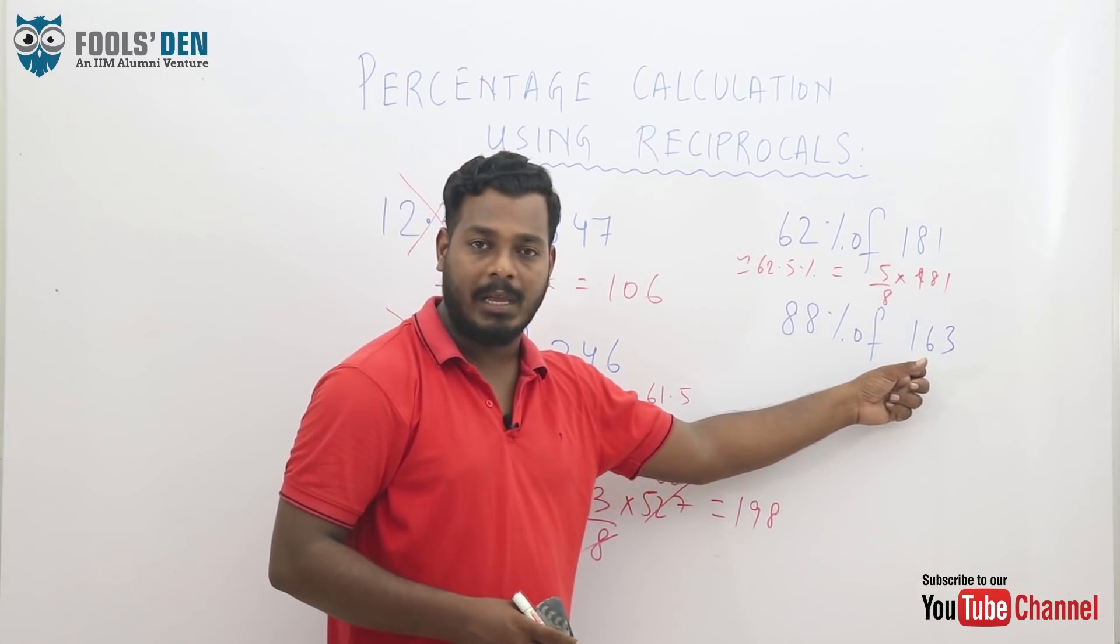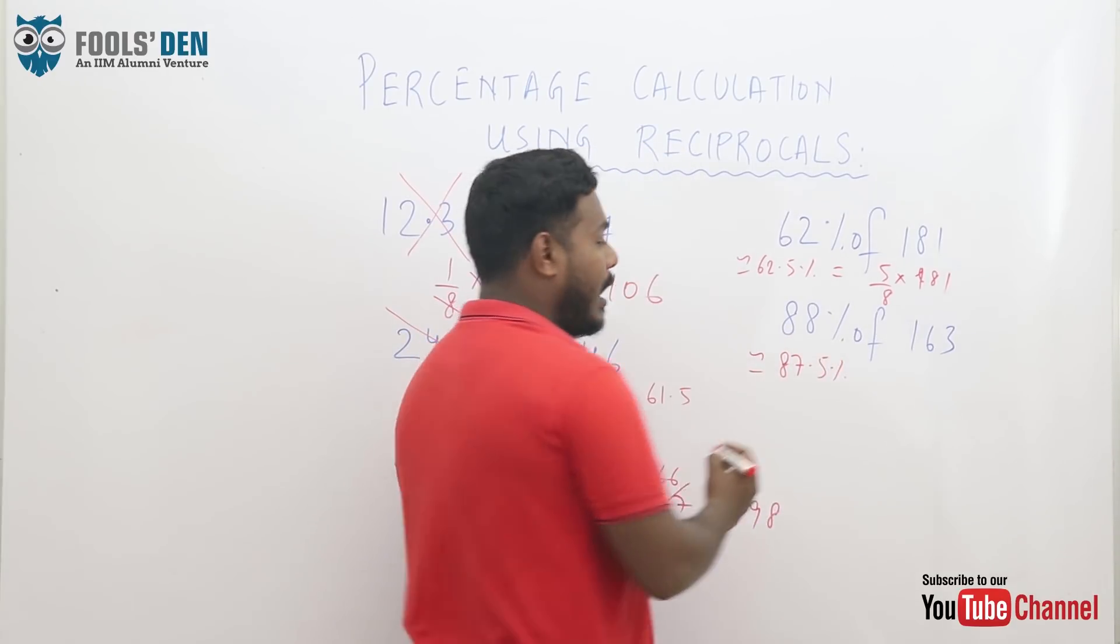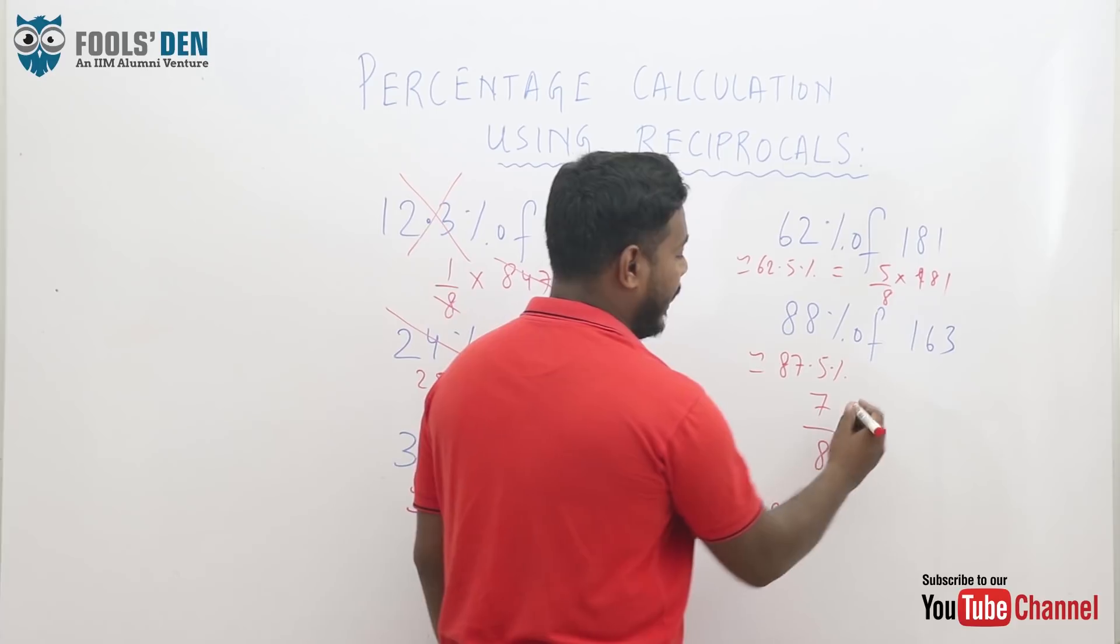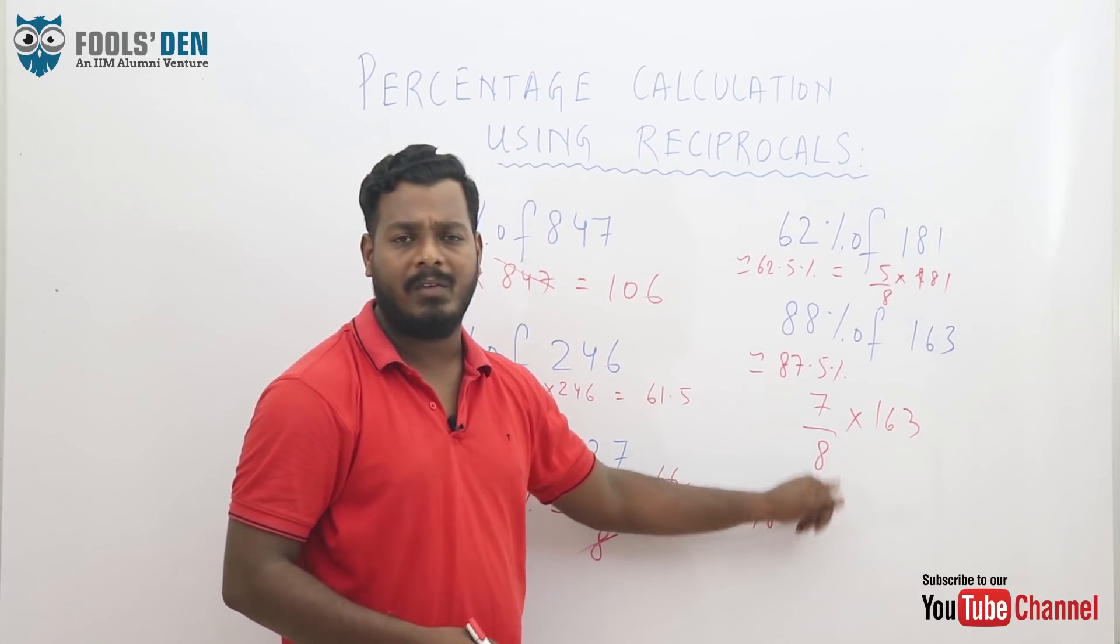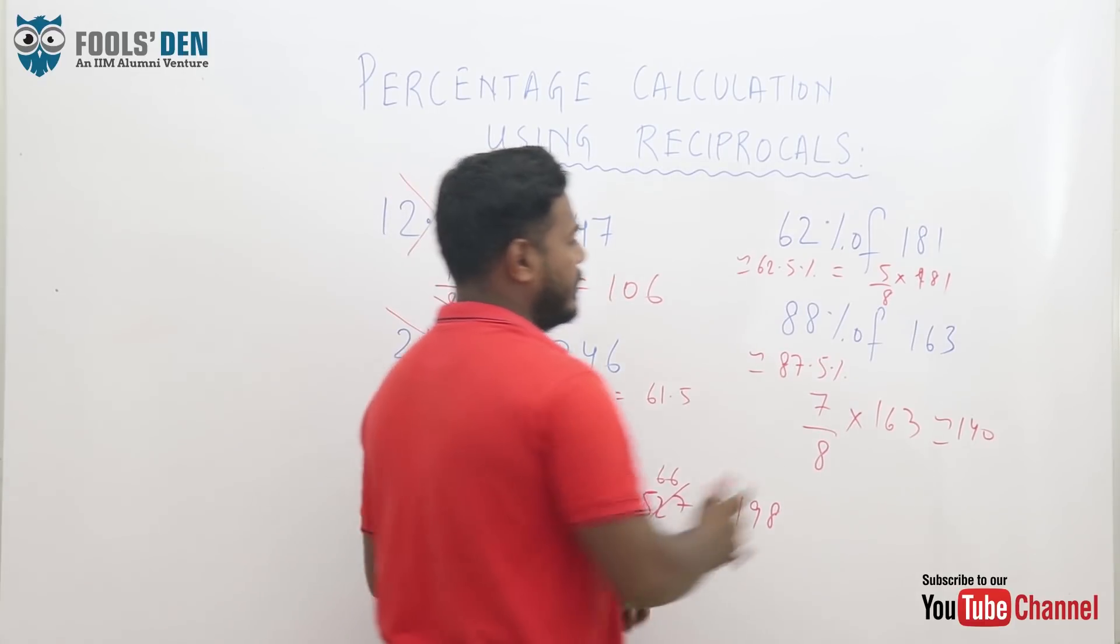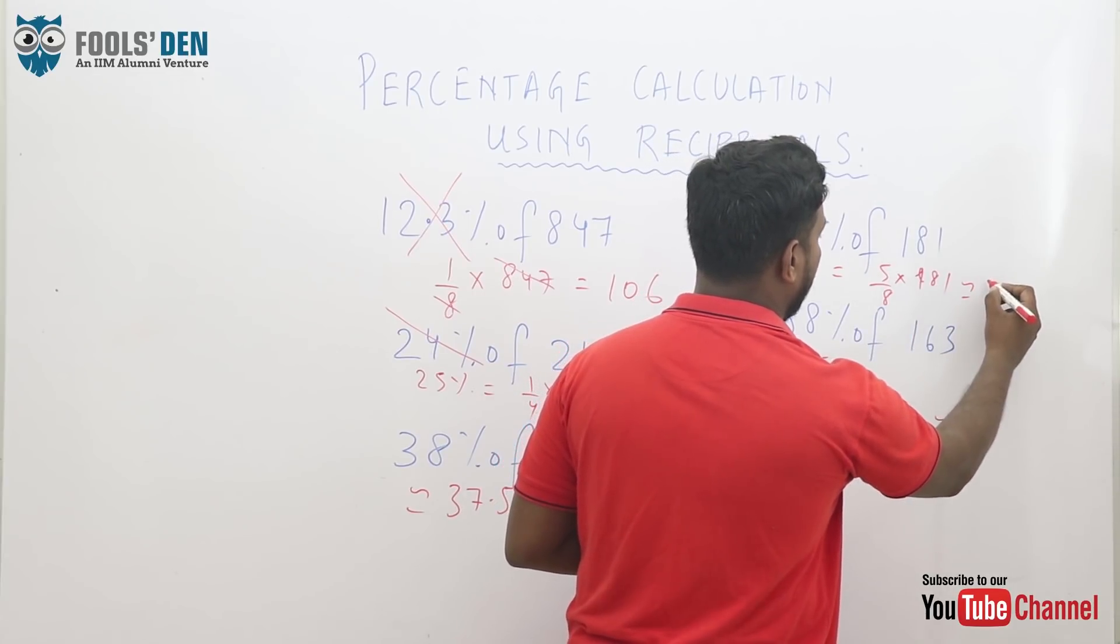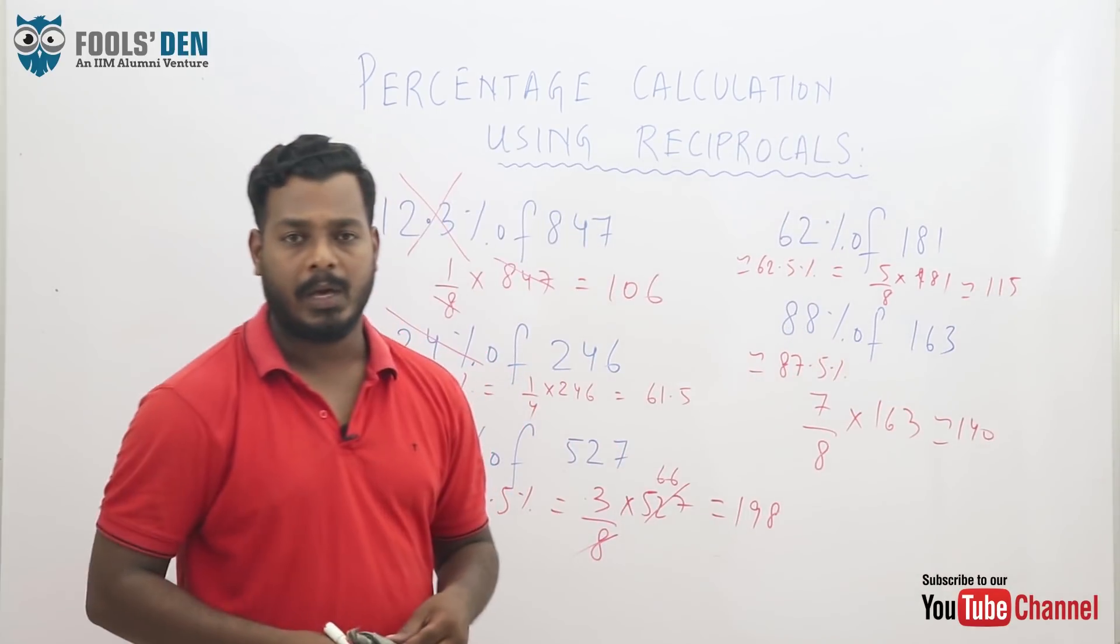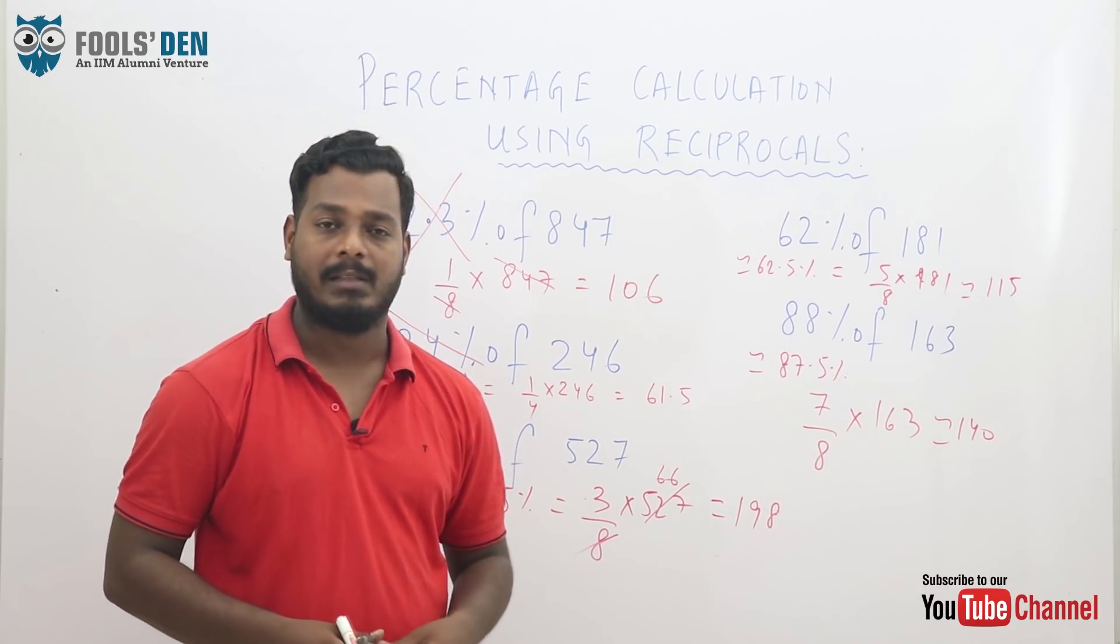Similarly, 88% of 163. 88% can be approximated to 87.5%, and 87.5 is equal to 7 by 8. So 7 by 8 of 163 again can be calculated easily because you just need to do one division and one multiplication. That's it. A few more varied percentages, let's see.